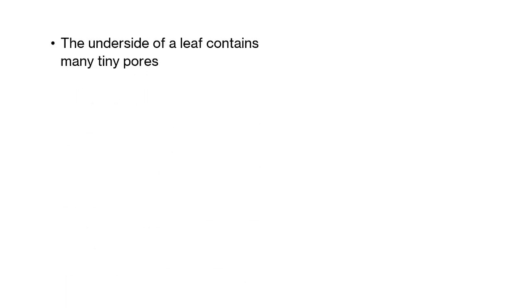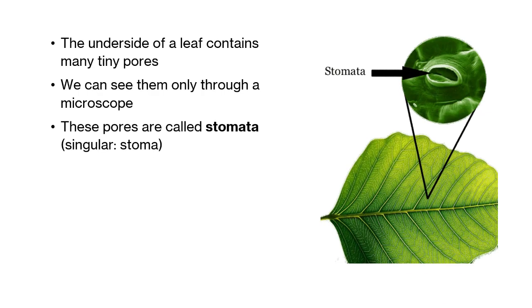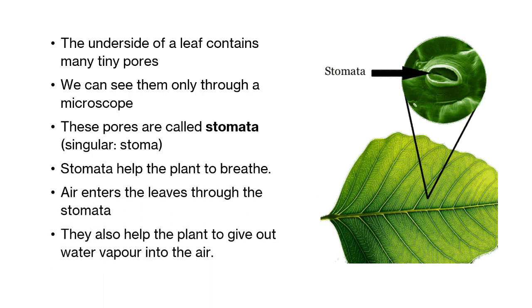The underside of a leaf contains many tiny pores. We can see them only through a microscope. These pores are called stomata. The singular of the word stomata is stoma. Stomata help the plant to breathe. Air enters the leaves through the stomata. They also help the plant to give out water vapor into the air.